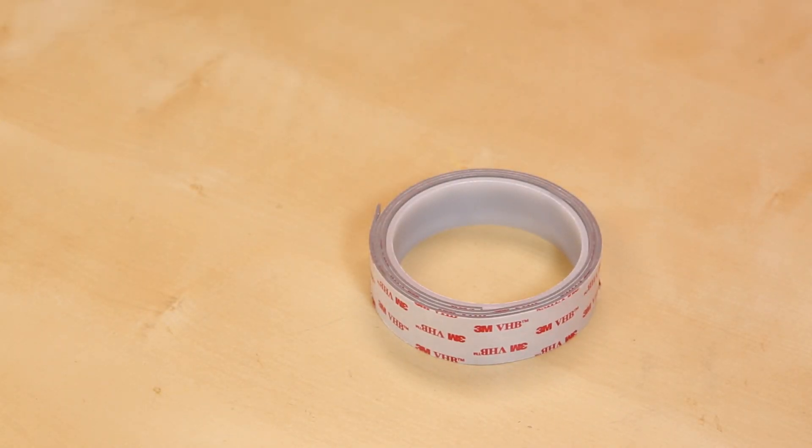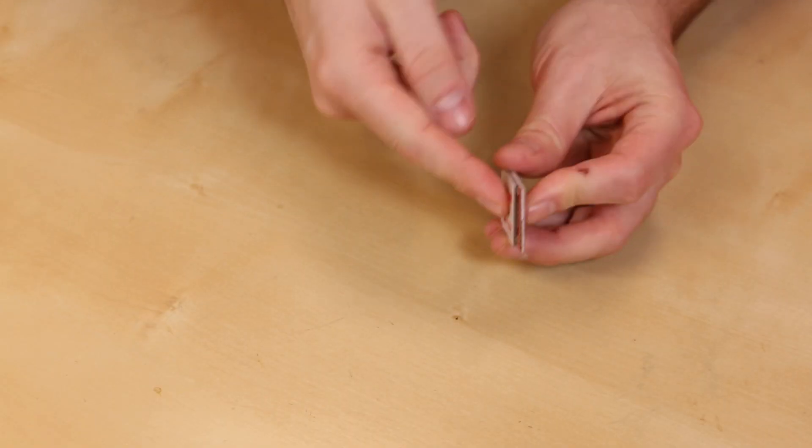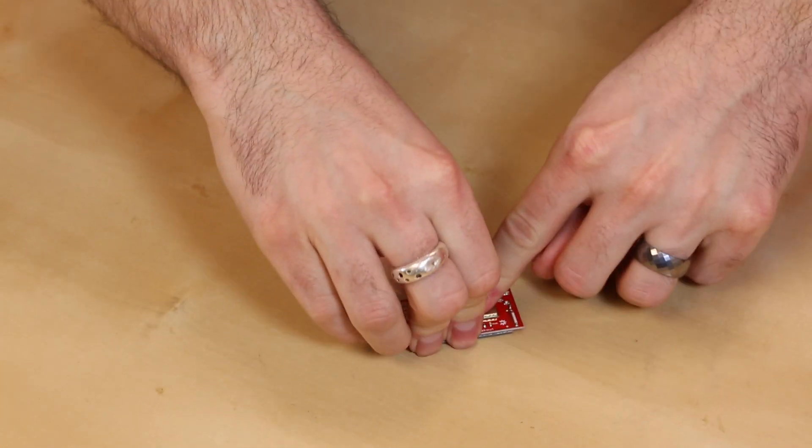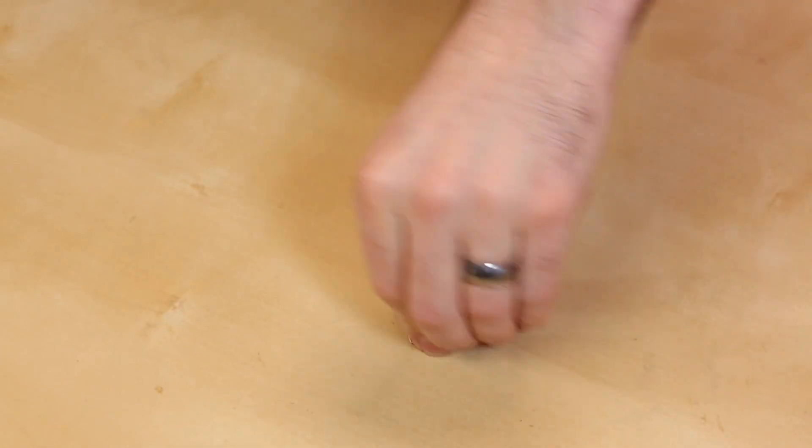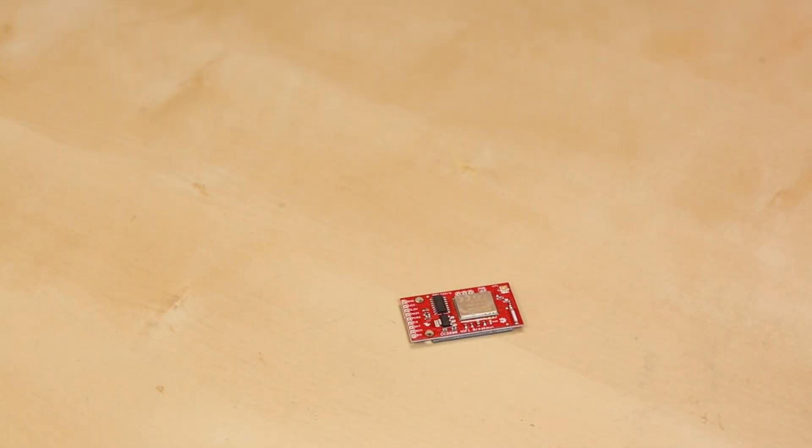This is industrial double-strength tape, and once you cut off a piece of this, stick a board down, it will stay. So I just put a little piece on the back here, I'm going to peel this off. Let's stick that down. And that's not going anywhere anytime soon, unfortunately.